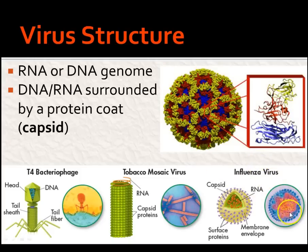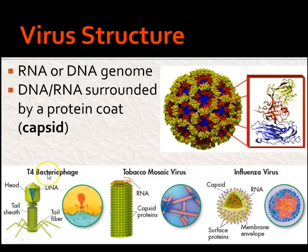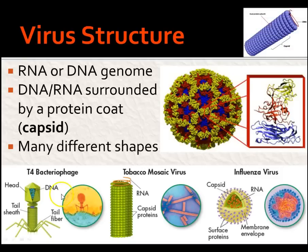Here we can see influenza — RNA or DNA genome surrounded by capsid. Tobacco mosaic virus, TMV, has the same basic structure. Even the really cool T4 bacteriophage has DNA or RNA surrounded by a protein coat. That's it — no other structures. And they come in many different shapes, whether in a helical pattern or an enveloped one.